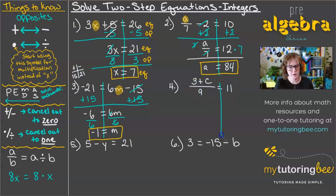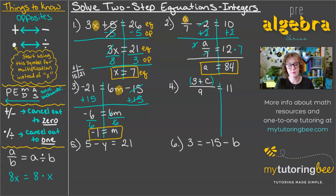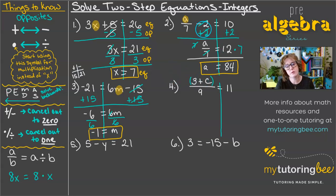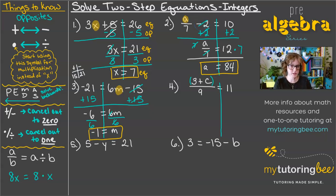In problem 4, the setup is a little different. Whenever you have an operation that is all in the numerator or all in the denominator, you want to treat that like it's in parentheses. Remember, when solving we work in backwards order of operations, so parentheses should be the very last thing we undo for this problem. In problem 2, the subtraction was outside the fraction, so we got rid of it first. But in this problem, the addition is inside those parentheses, so we take care of that last and deal with the division by 9 first.